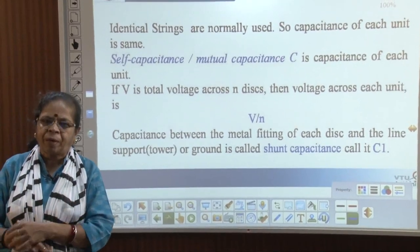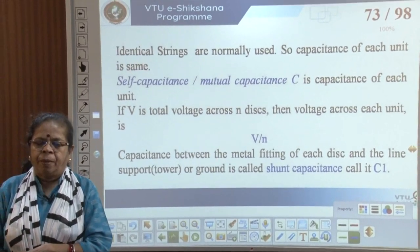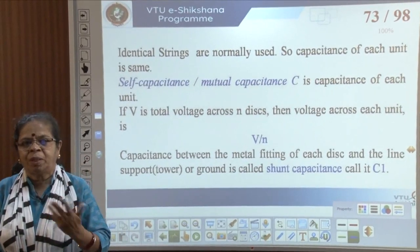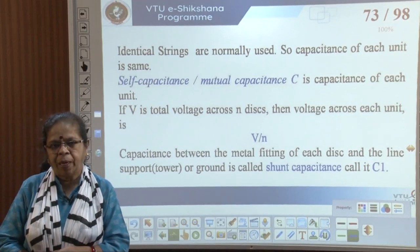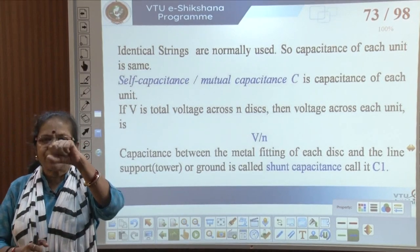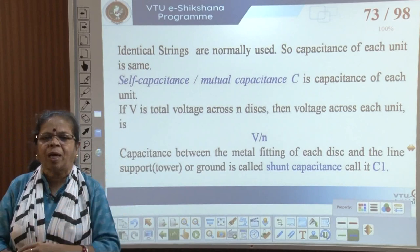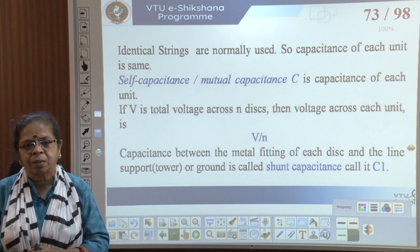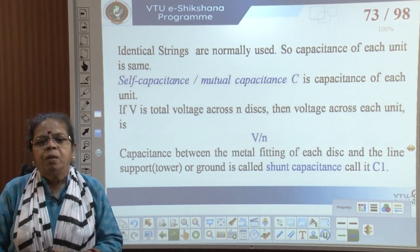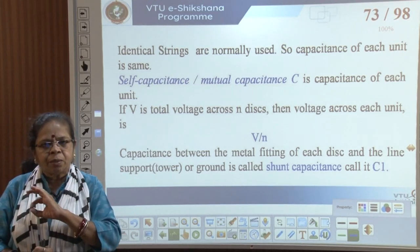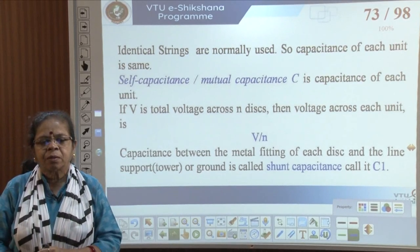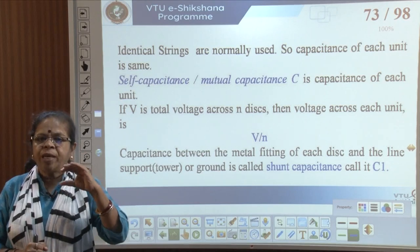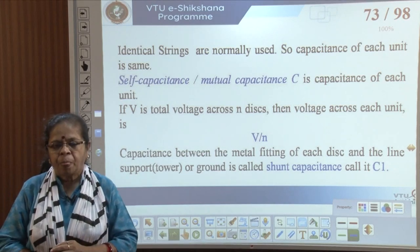From a manufacturing perspective, it makes sense to have all discs of the same identical type — if one disc gets damaged, you can remove and replace just that disc without replacing the whole insulator. In suspension-type string insulators, the strings are identical.